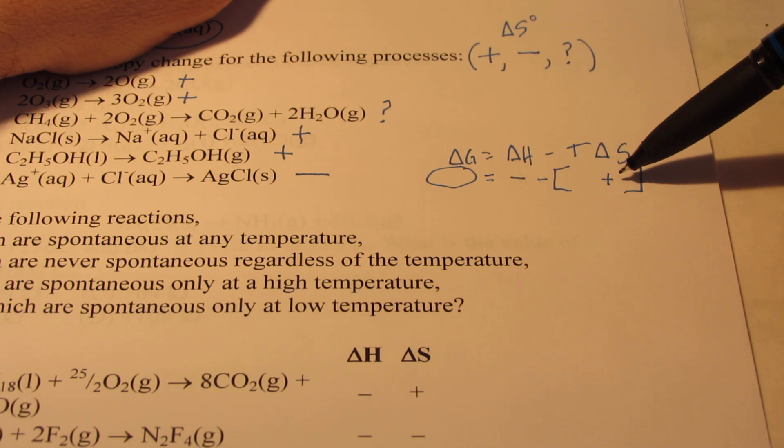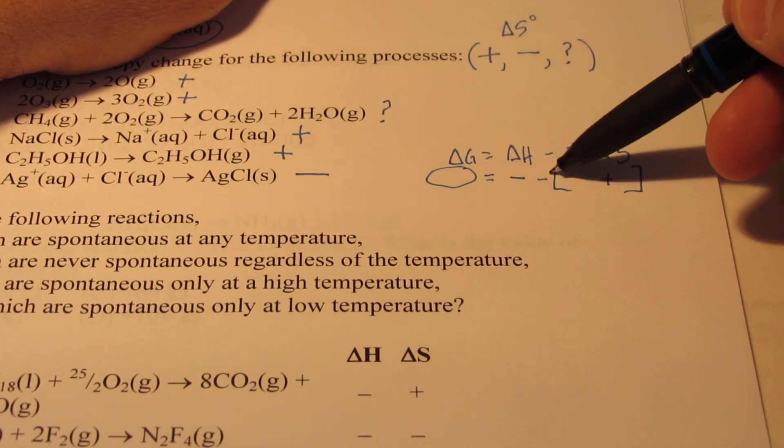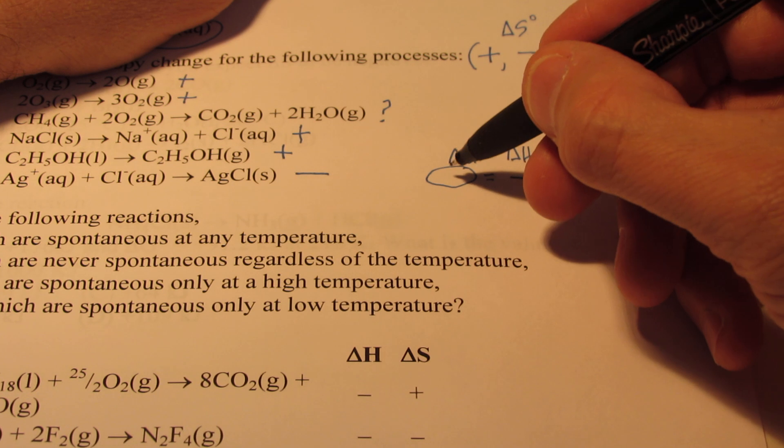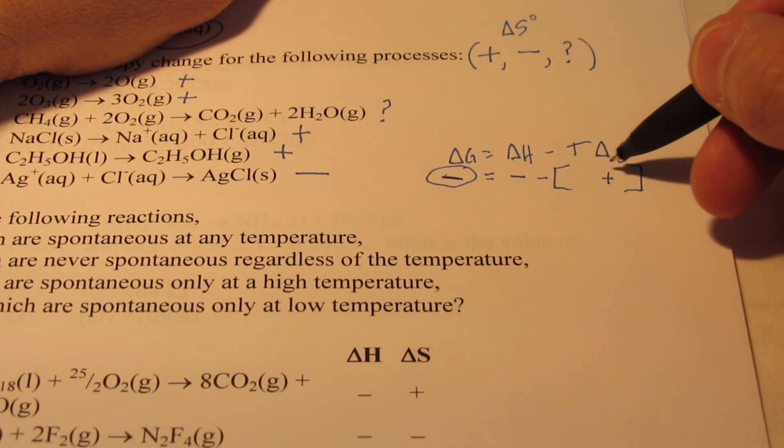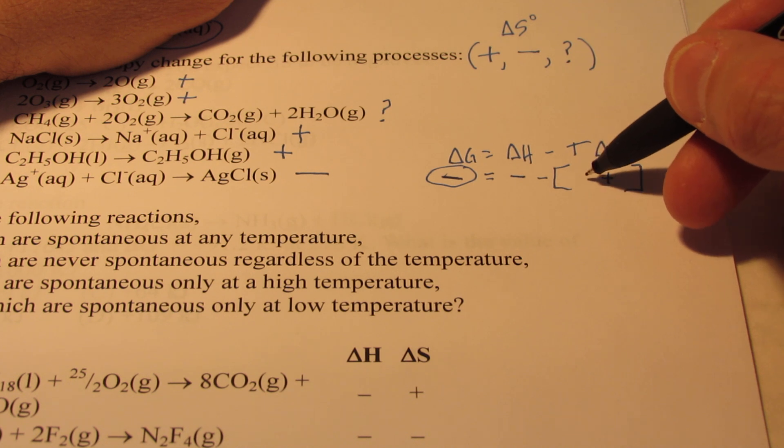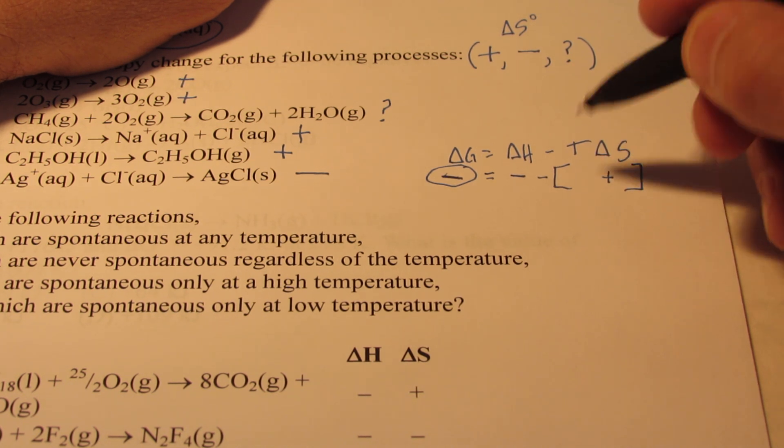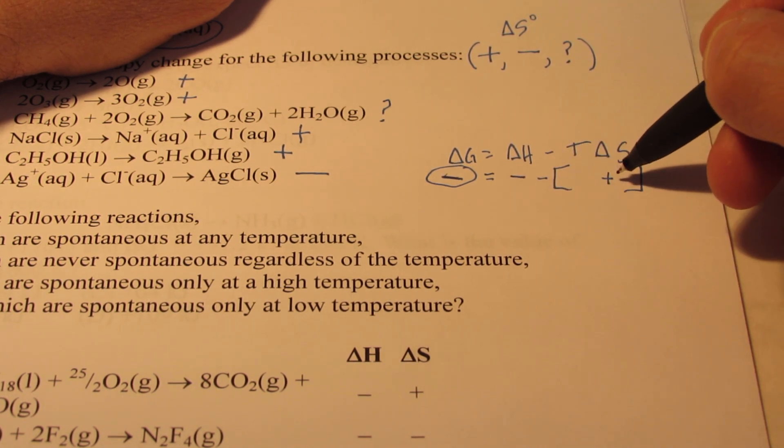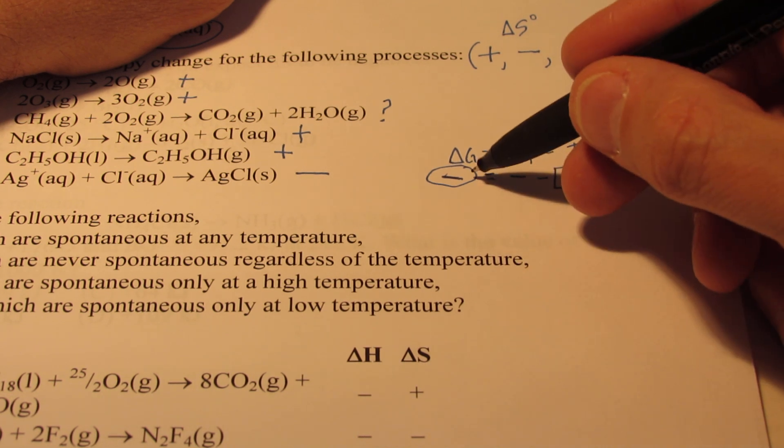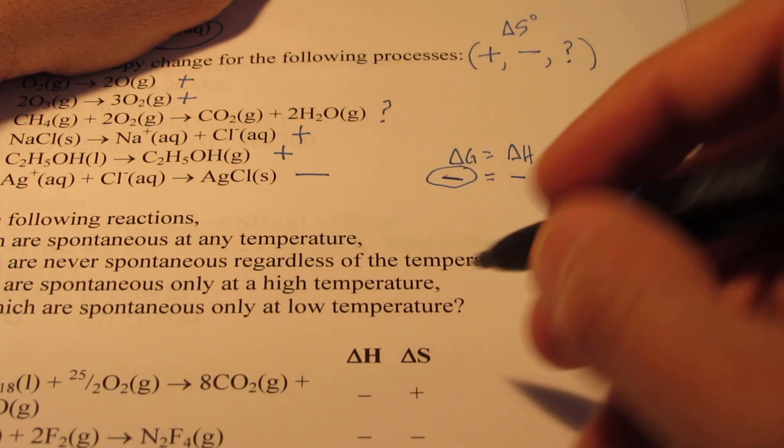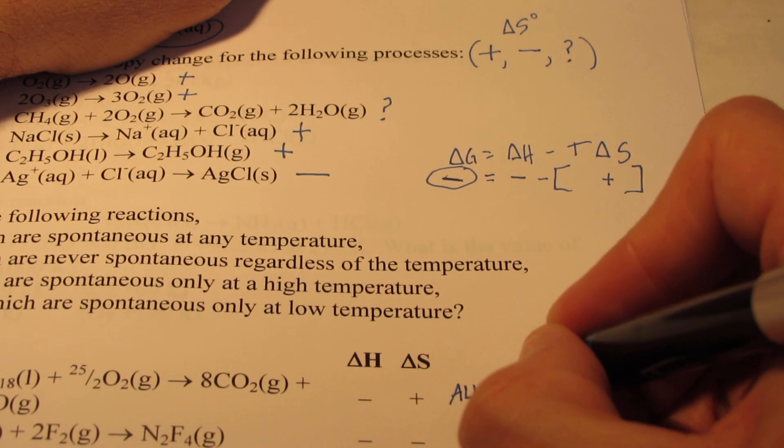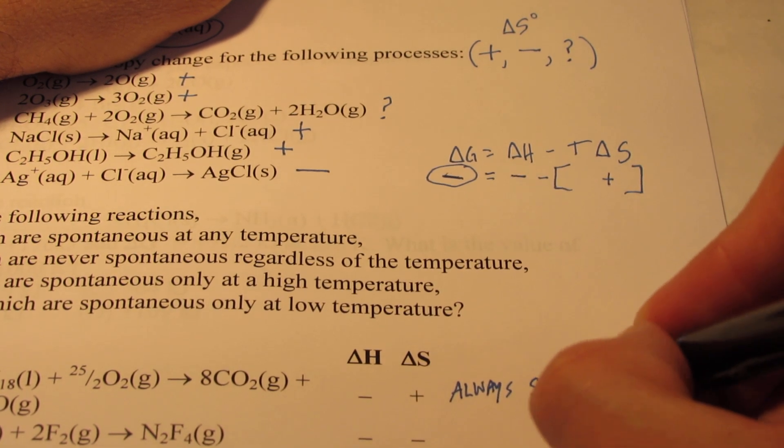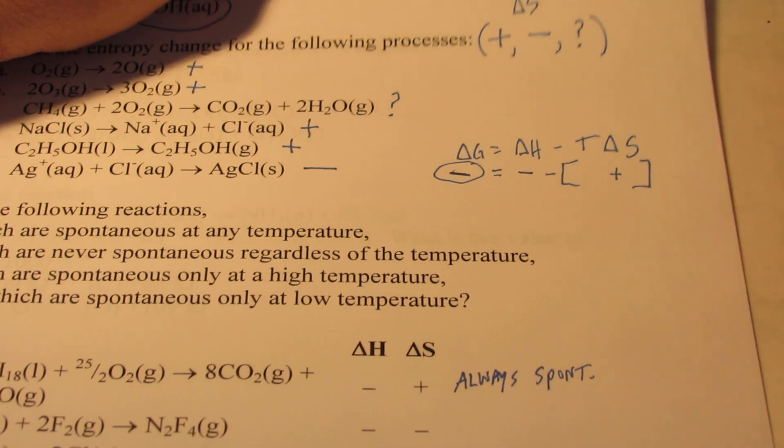Yeah, whether it's big or small, it doesn't make a difference. If you're subtracting a positive from a negative, it's going to make it more negative. So, it turns out it doesn't make a difference if the temperature is a big temperature or small temperature. I'll still be subtracting a positive number. And therefore, delta G will always be negative, which means it's spontaneous. So, letter A will always be spontaneous and it doesn't make a difference what the temperature is.